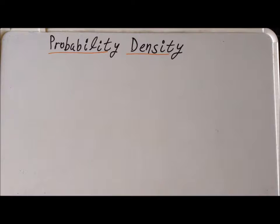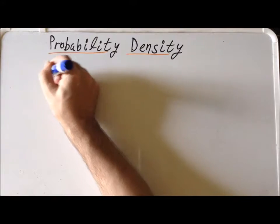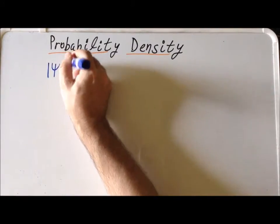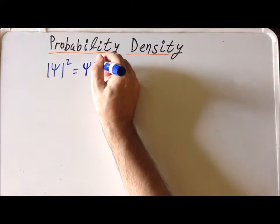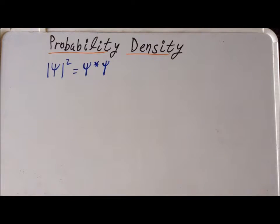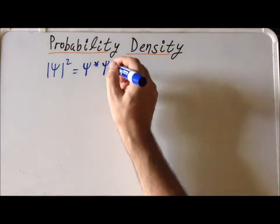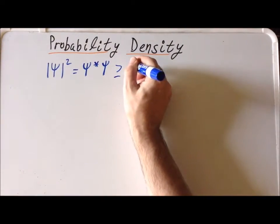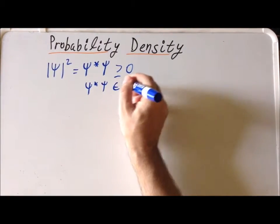Hello. In this video, we want to prove an important result about the probability density. Recall that if we have a wave function psi, the probability density is the square modulus. Or if we have a complex wave function, it's equal to psi star psi. The result we want to prove is that this is a non-negative real number, so it is greater than or equal to zero, and also an element of the real numbers.